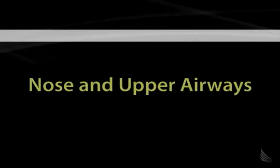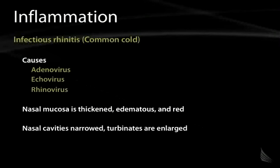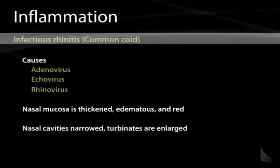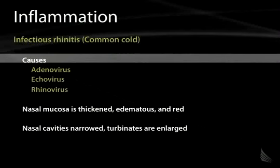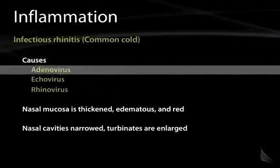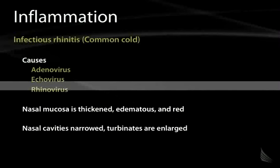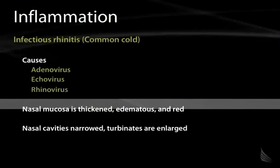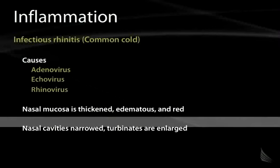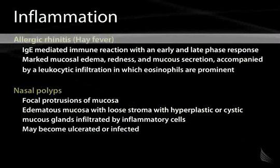Now, moving to the nose and upper airways, we will deal first with inflammation and infections. The common cold, or infectious rhinitis, has generally viral causes ranging from adenovirus, echovirus, and rhinovirus, depending on the season and geography. Physical findings are classic: thickened, erythematous nasal mucosa with narrowed nasal cavities and enlarged turbinates.